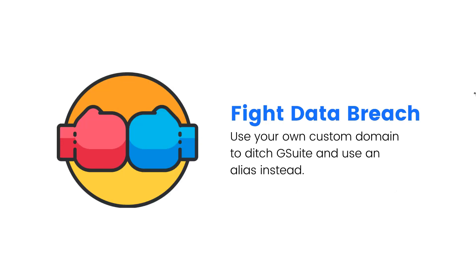The sixth benefit of email aliases is to fight data breaches. Most companies that provide email aliasing solutions also integrate with Have I Been Pwned, which means your email alias is constantly being scanned for breaches. If your email alias gets into a breach, you still have the kill switch so you can just kill it. And you will also usually receive an email reporting the data breach. This means your email will be way more secure, and you will always know who's sharing it, who has access to it, and what they can do with it.